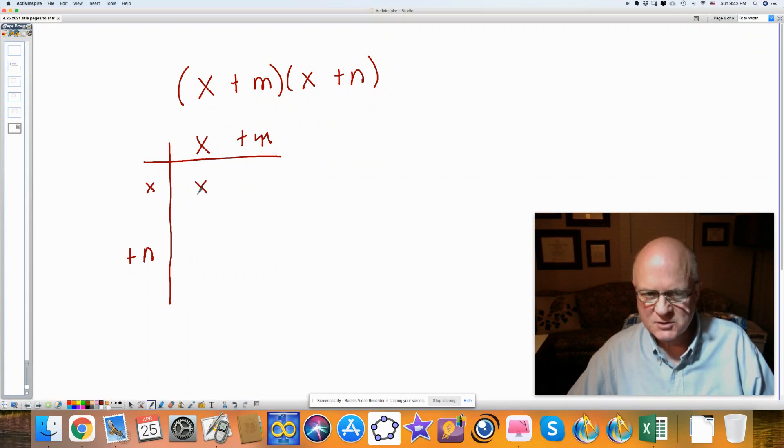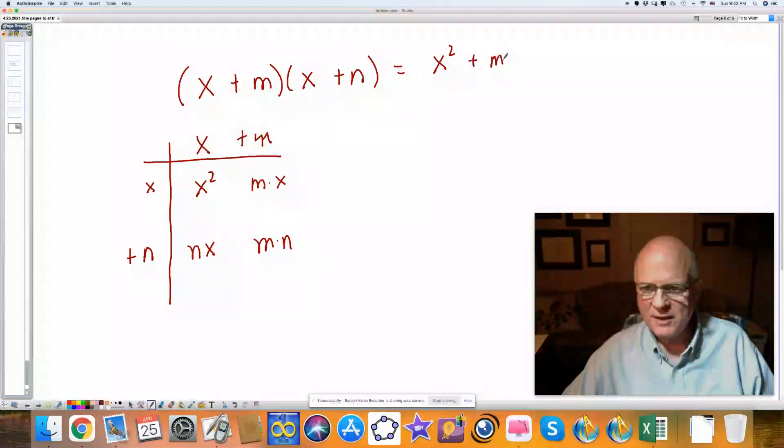So I have x times x is x squared, x times m is mx, x times n is nx, and m times n is mn. And when I write these out, I can go x squared plus mx plus nx plus mn.